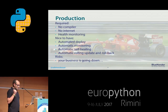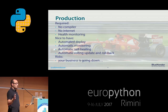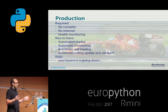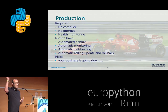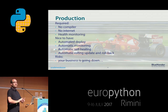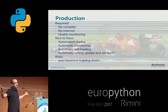Then we hit production. Here are some hard requirements. No compiler in production — it's just a matter of fact. We cannot afford it; it's a security nightmare. No internet at all — there's no point in reaching PyPI or whatever. This might be the hardest thing, but if we can achieve it, we exclude a whole bunch of security issues. And some kind of health monitoring.